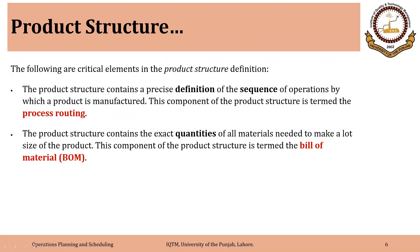The critical elements of a product structure definition are: first, the definition of the sequence of operations by which a product is manufactured — this component is termed process routing. Process routing includes the different operations involved, the definition of those operations, and the sequence required. We will come back to this point in a later lecture.